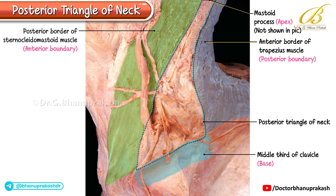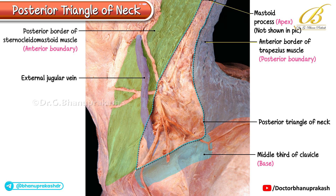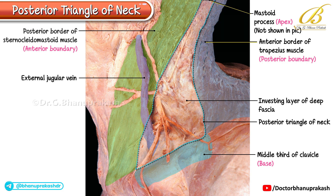Crossing the triangle, we can see the external jugular vein emerging just below the mandible, traversing the anterior surface of the sternocleidomastoid, and then piercing the investing layer of the deep fascia.